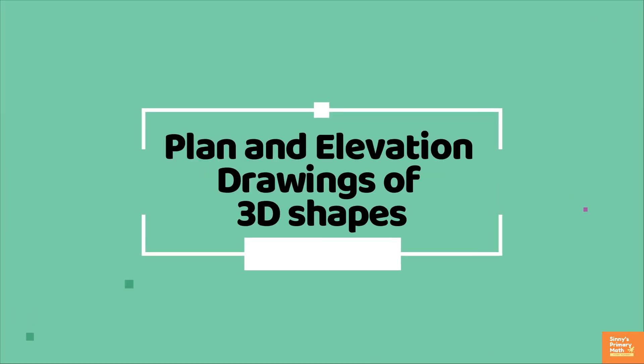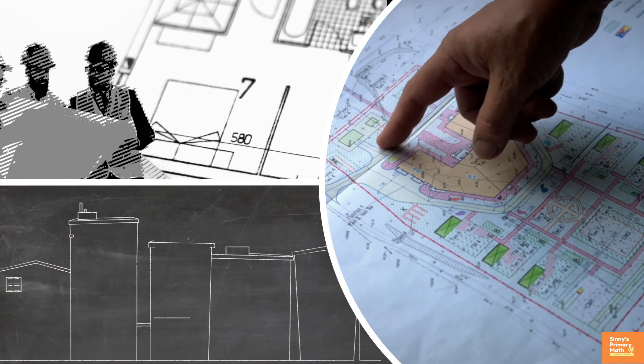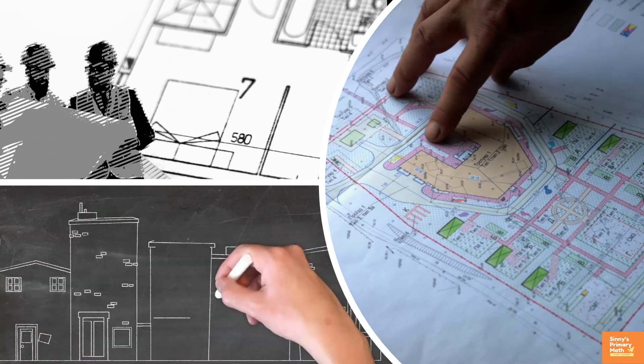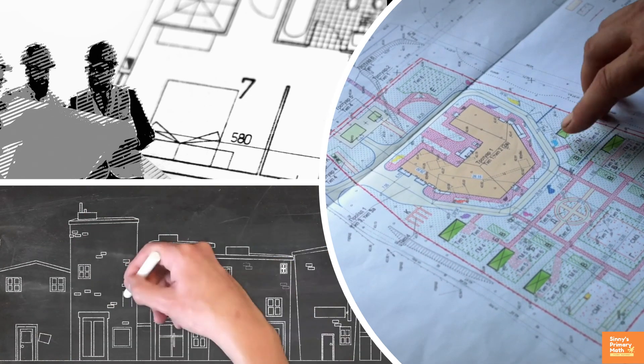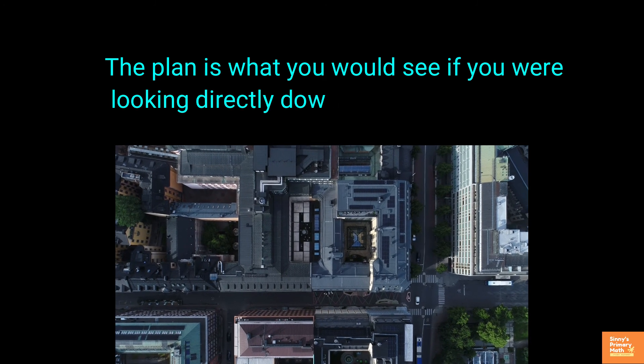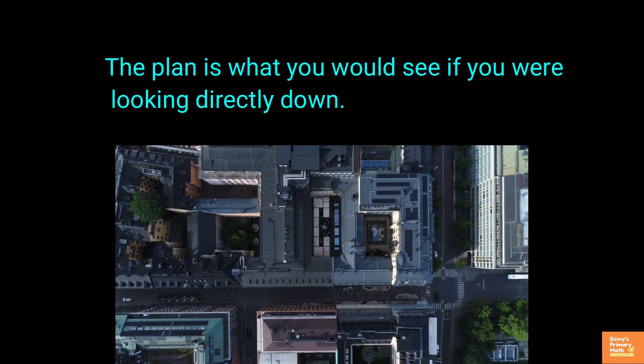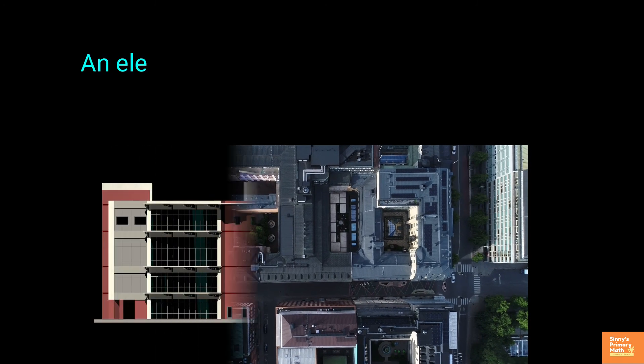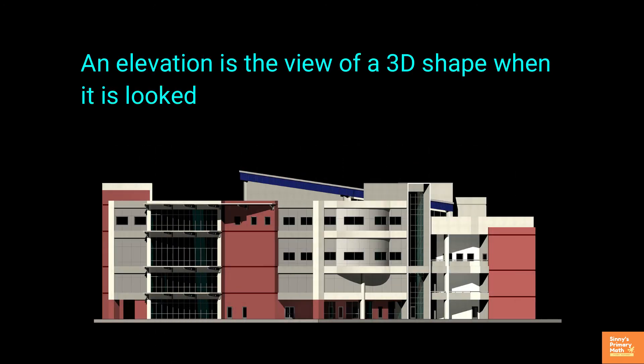Plan and elevation drawing of 3D shapes. When an architect designs a building, they will draw the plans and elevation of a building. A plan is a scale drawing showing a 3D shape when it is looked at from top. The plan is what you would see if you were looking directly down. An elevation is the view of a 3D shape when it is looked at from the side or from the front.